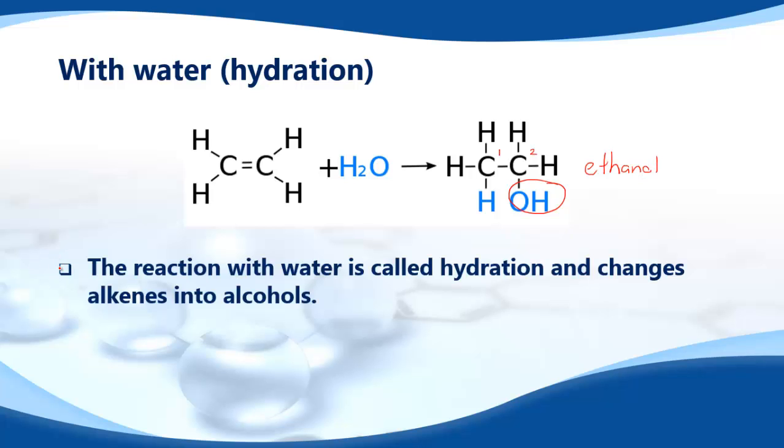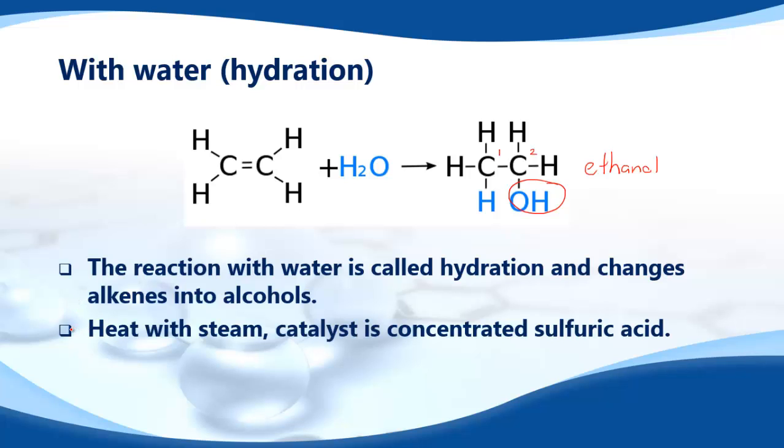The reaction with water is called hydration and changes alkenes into alcohols. You heat with steam, the catalyst is concentrated sulphuric acid. So you might see it written like this. It means concentrated sulphuric acid catalyst. Sometimes you'll see it written above the arrow like that. And you make alcohols, in this case ethanol.